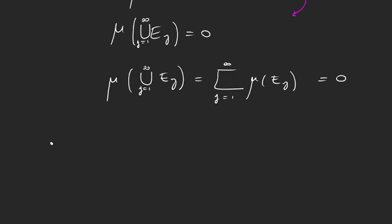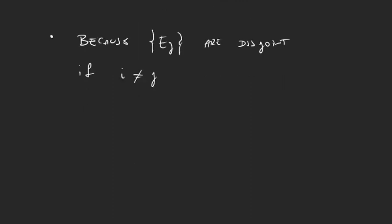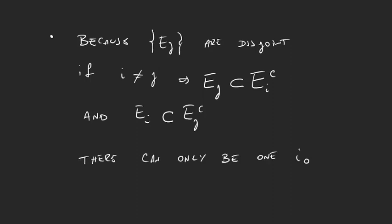Now what would happen if that wasn't the case? Now because the sequence is disjoint, then if i, a subindex, is different to another subindex j, because they're disjoint, what we will have is that E sub j is a subset of E sub i complement, and also E sub i is a subset of E sub j complement.